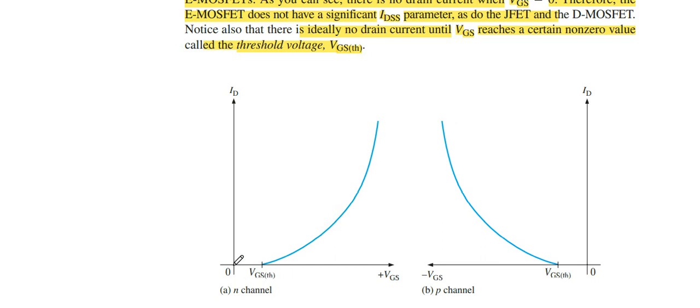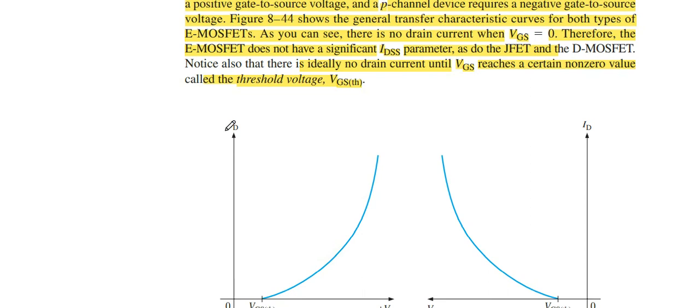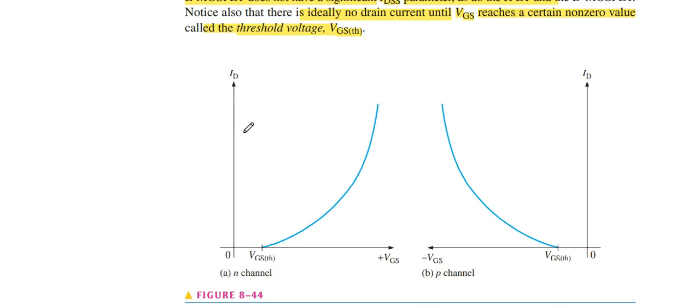Between VGS zero to threshold, E MOSFET does not operate and ID current is not increasing. Its value is equal to zero in these two points. So VGS must be increased. N-channel VGS is positive and P-channel VGS threshold is negative.